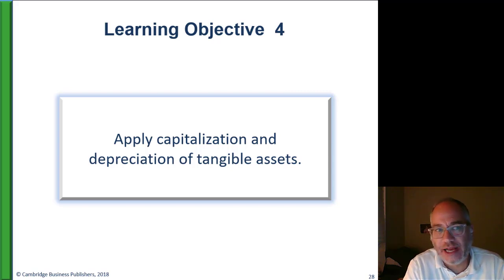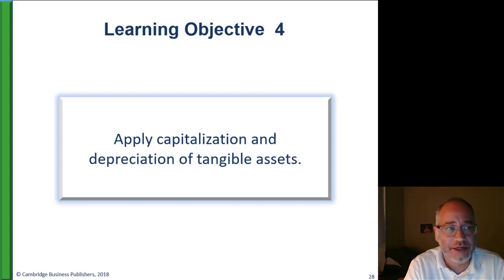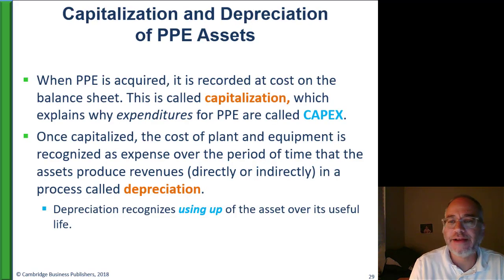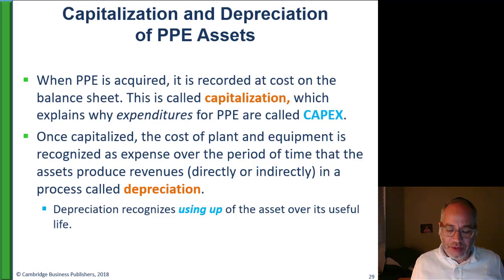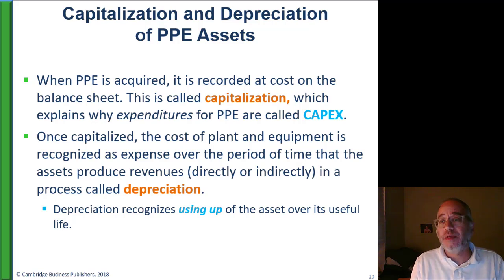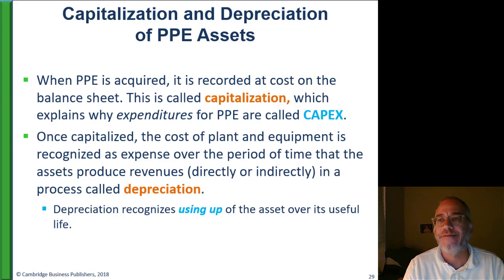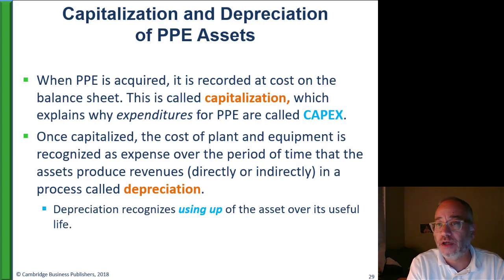Now let's talk about tangible assets, specifically property, plant, and equipment. We've been talking about capitalization. Capitalization is the idea that you have an expense, and the expense can be booked as an asset on your balance sheet because it has value going into the future. It's called capitalization.